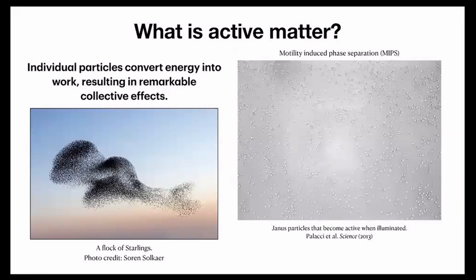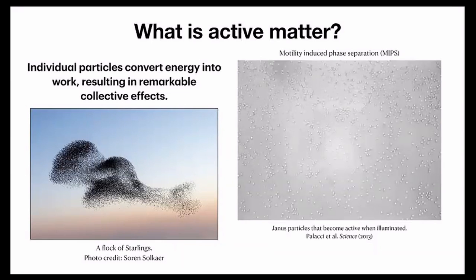What is active matter? Briefly, active matter consists of individual particles that convert energy into work, resulting in remarkable collective effects. A more everyday example is a murmuration of starlings — beautiful photography by Søren Solkær — where birds flock and collectively move as a group without a leader.